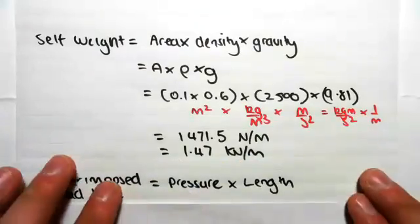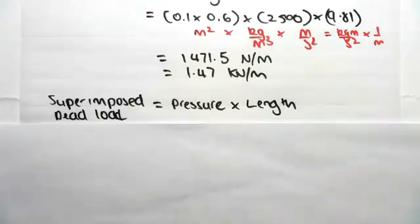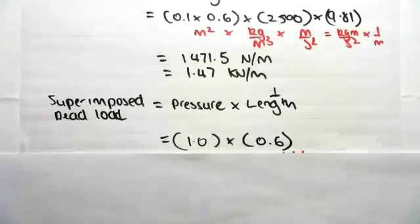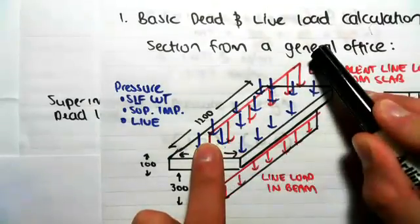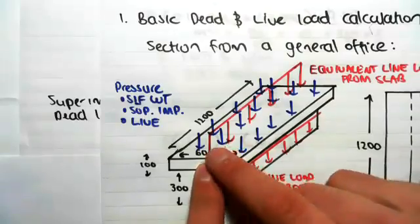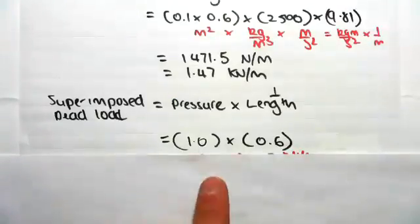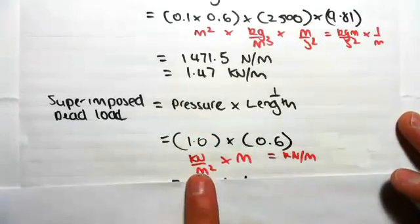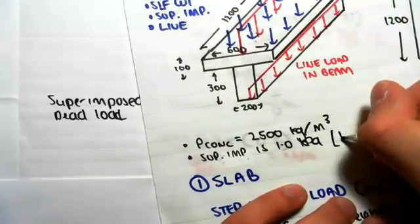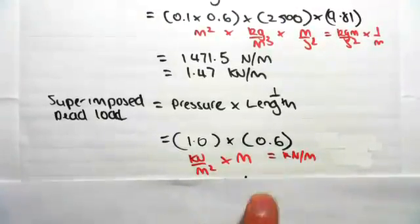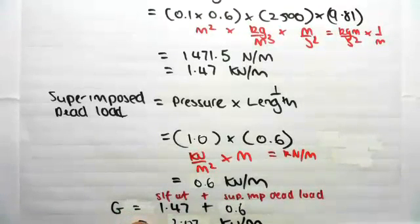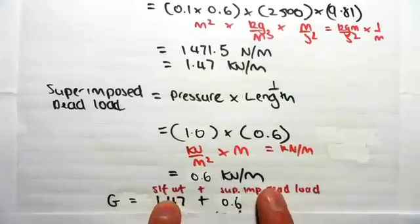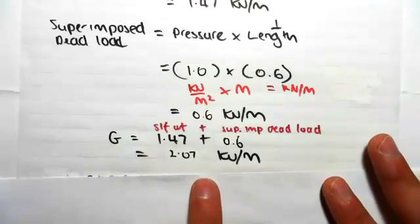For the superimposed dead load, it's pressure times the perpendicular length to the line load. The superimposed pressure is 1 kPa and the perpendicular length is 0.6 m, so 1 × 0.6 = 0.6 kN/m. The total dead load is self-weight plus superimposed dead load: 1.47 + 0.6 = 2.07 kilonewtons per meter.